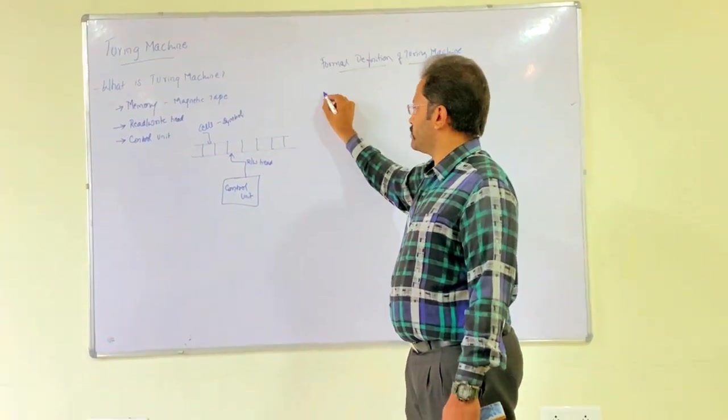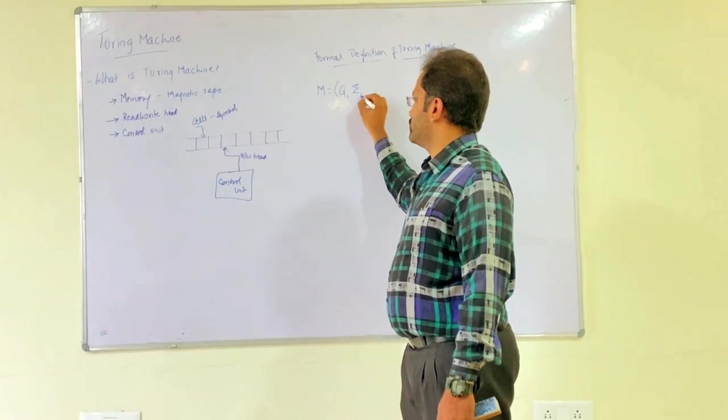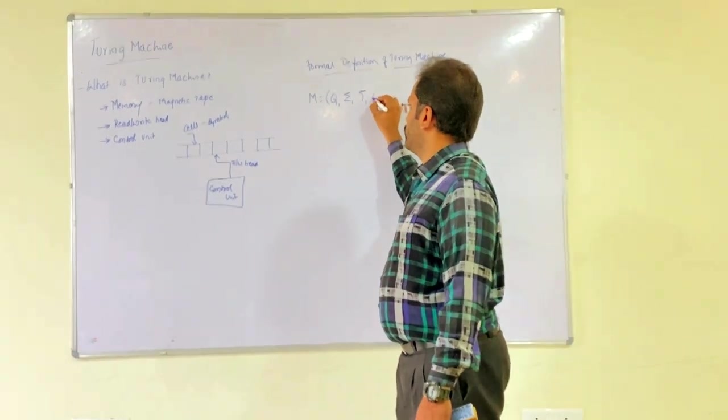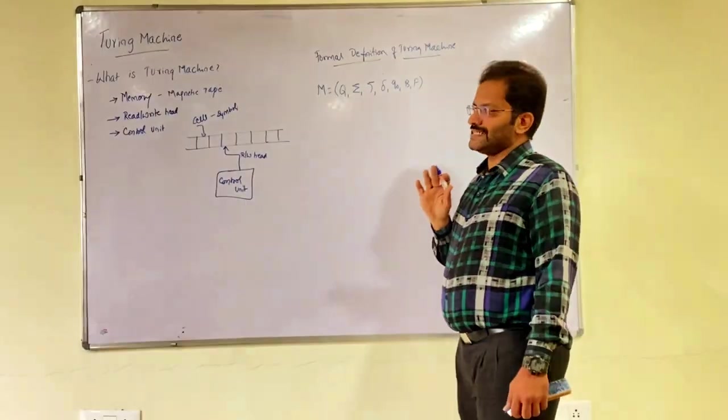Okay, a Turing machine M is a seven-tuple system which has Q, Sigma, Tau, Delta, Q0, B, and F. These are seven-tuples.